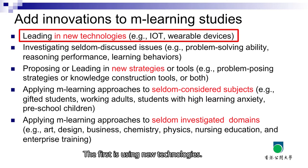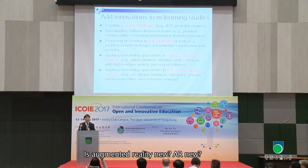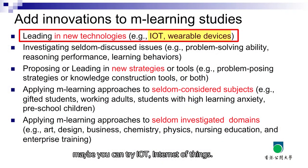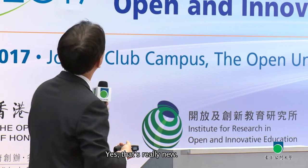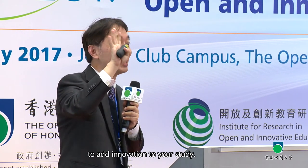The first strategy is using new technology. But what is the definition of 'new technology'? Is mobile technology new? Is augmented reality new? Not new enough. What is really new? If you want to try new technology, maybe you can try IoT — Internet of Things. Very few studies have been conducted using IoT or wearable devices. But most of you are from an educational background, not engineering, so you still have four other opportunities to add innovation.